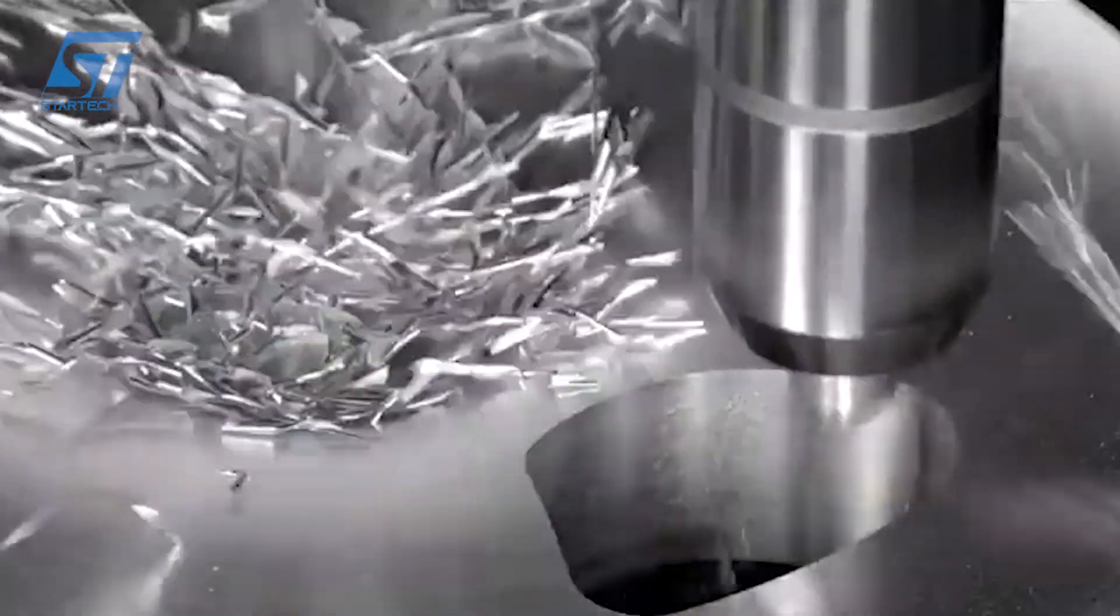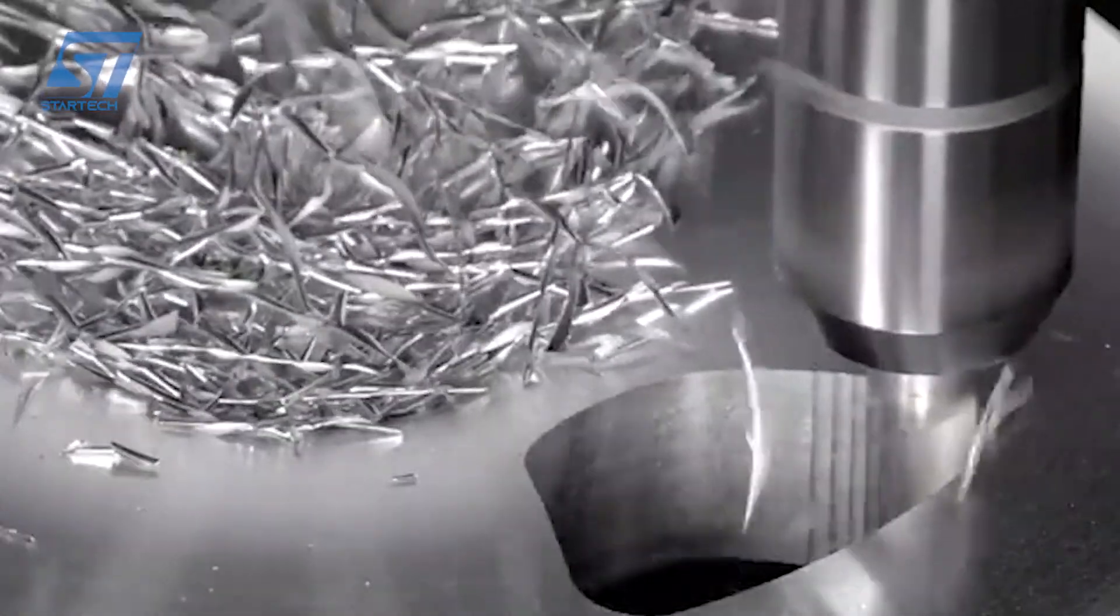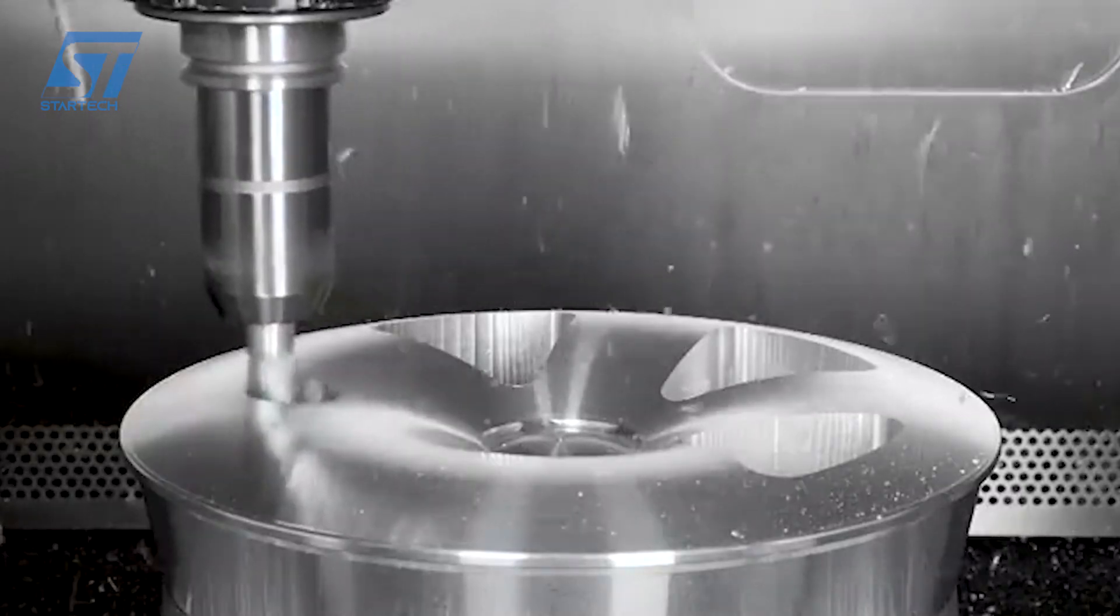More precise turning operations refine the shape, bringing it closer to the final dimensions and creating smooth surfaces on areas like the rim's inner and outer edges.